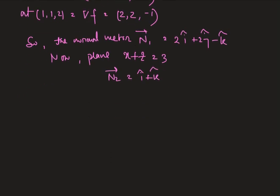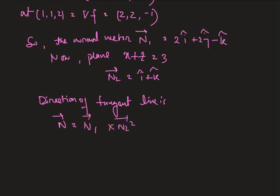Therefore the direction of tangent line is n which is a cross multiplication of n1 and n2, and which is i cap, j cap, k cap. And we are to write the coefficients of n1, that is 2, 2, minus 1, and coefficients of n2, that is 1, 0, 1.